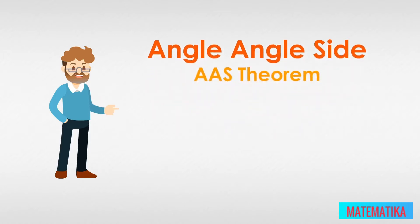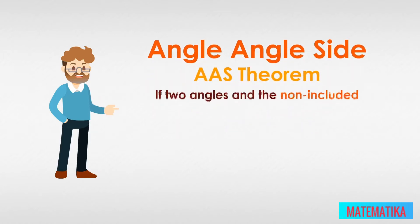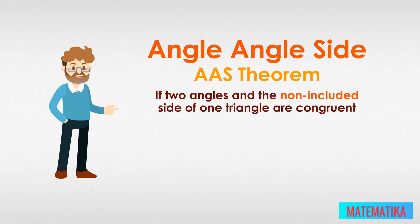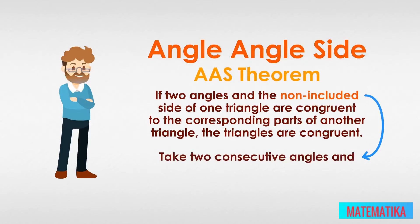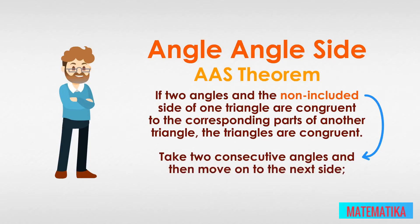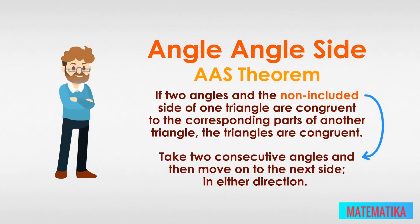The AAS theorem says: if two angles and the non-included side of one triangle are congruent to the corresponding parts of another triangle, the triangles are congruent. Notice how it says non-included side, meaning you take two consecutive angles and then move on to the next side in either direction — you do not take the side between those two angles.